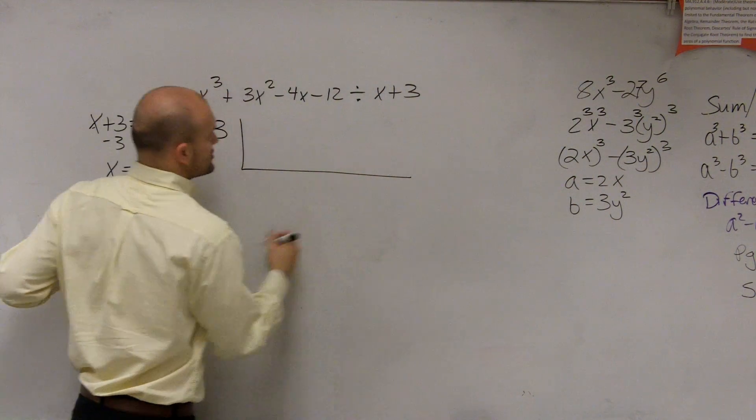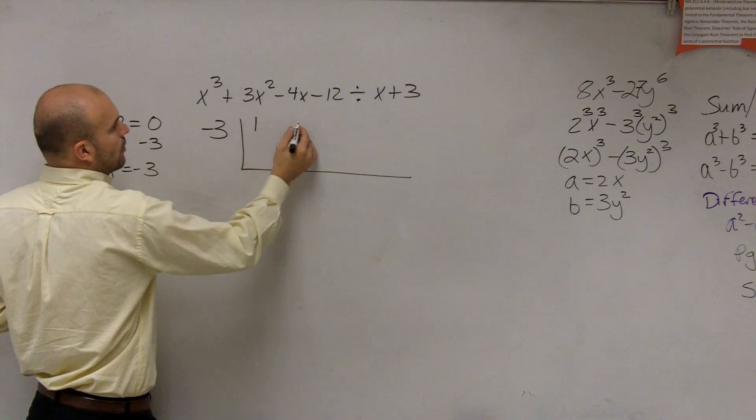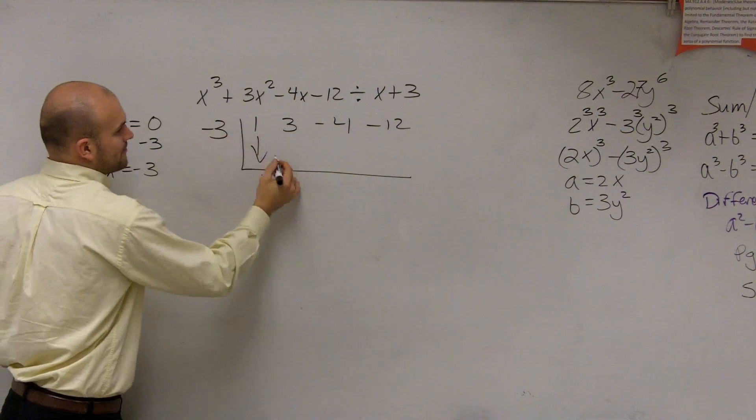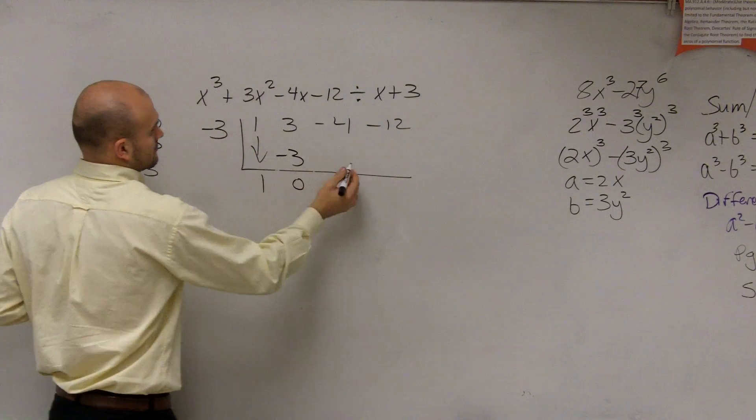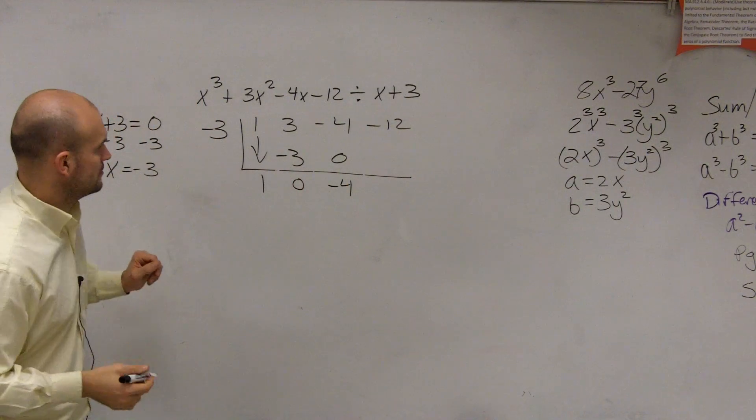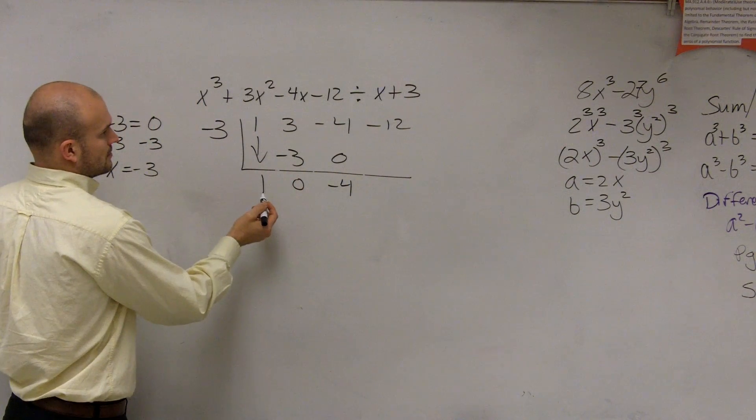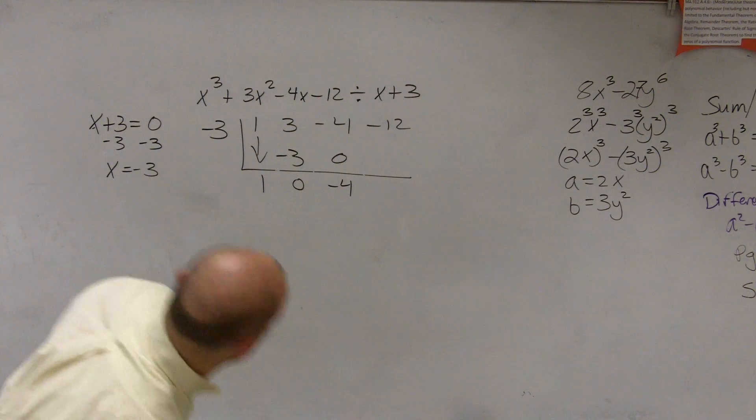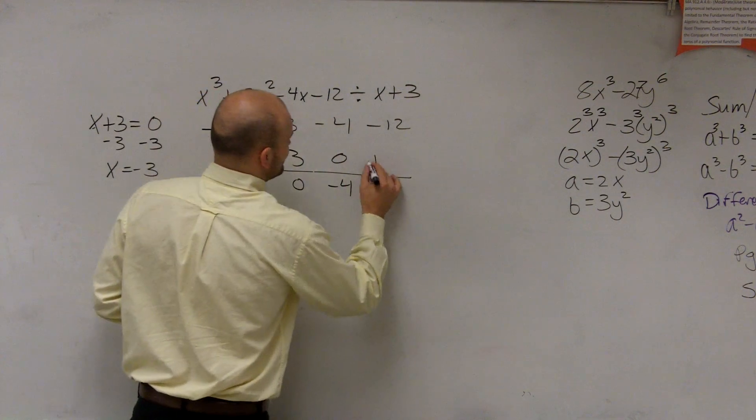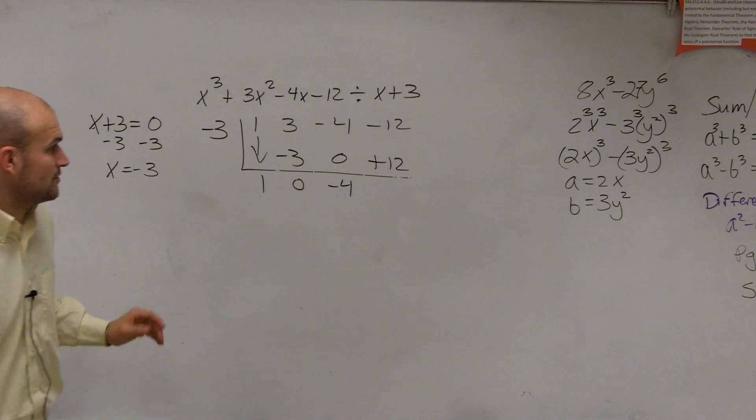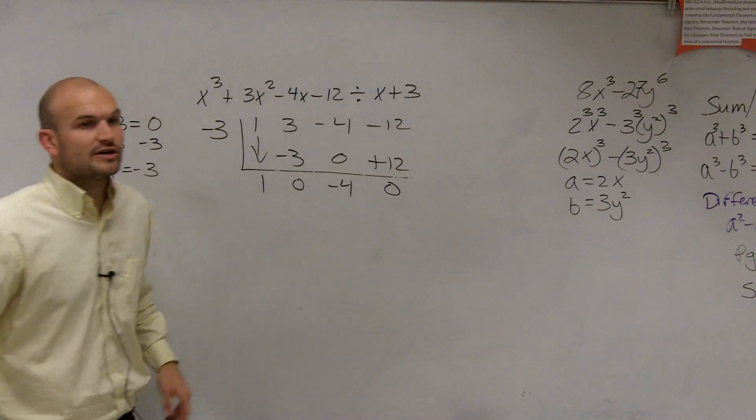Right. So now, by applying synthetic division, remember, we take the coefficients of each term: 1, 3, negative 4, negative 12, bring down the first number... Did I write the problem right? Oh, I did. I just wasn't multiplying it. Thank you. So that's by applying synthetic division, which you guys can see I did very, very quickly, right?